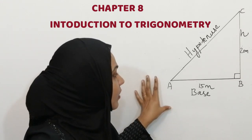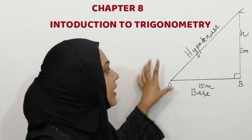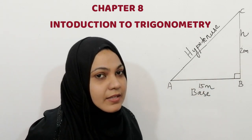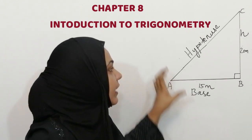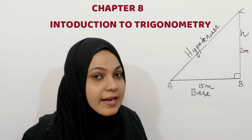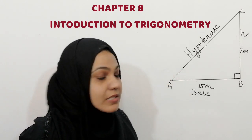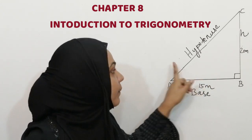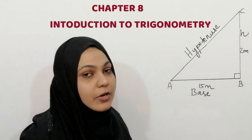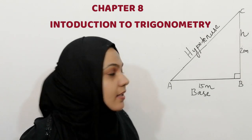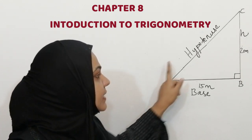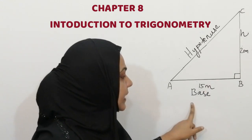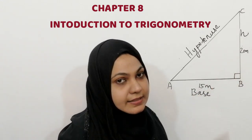In Pythagoras Theorem we have to find what is hypotenuse, what is base, and what is height. First we can check how we can find hypotenuse. Hypotenuse means the longest side of a right angle triangle is called hypotenuse. The side opposite to 90 degrees is called hypotenuse, and the other two sides are base and height.